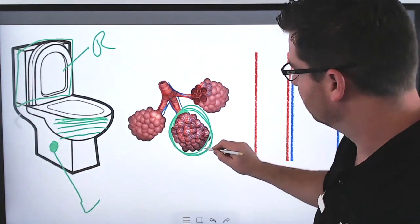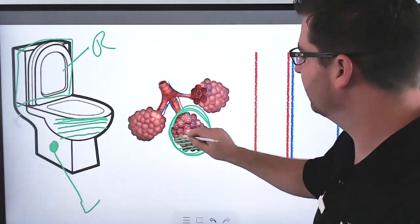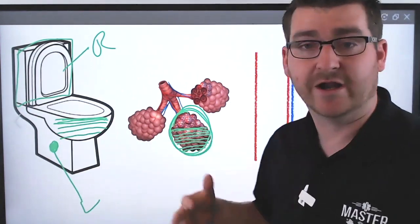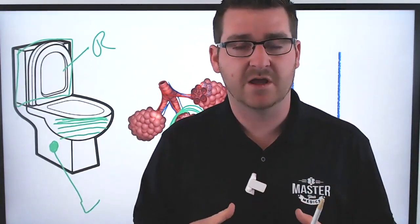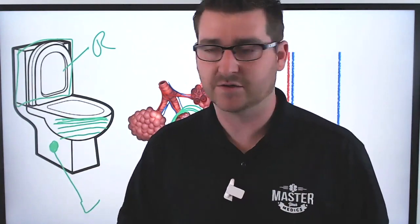So that means in these alveoli right here, that in pulmonary hypertension, those capillaries are going to start leaking fluid into those alveoli. That decreases the usable airspace inside the alveoli. It decreases oxygenation of our patient, causes lots and lots of problems.